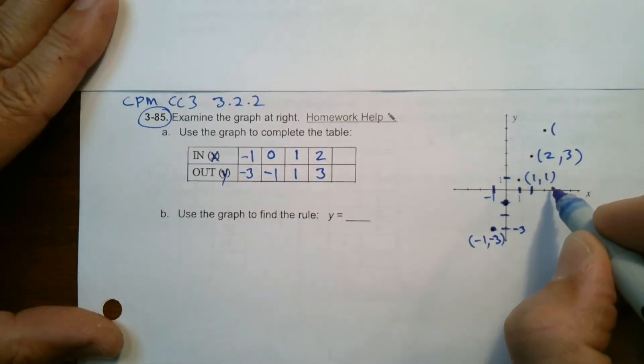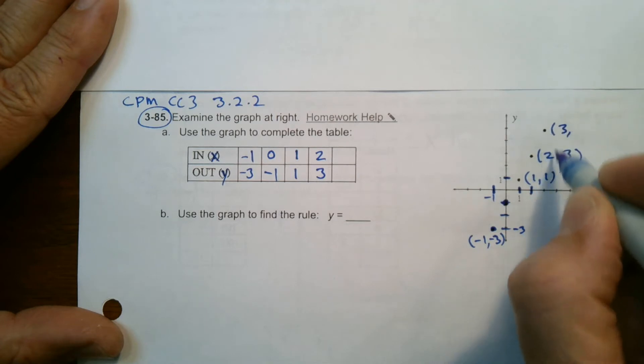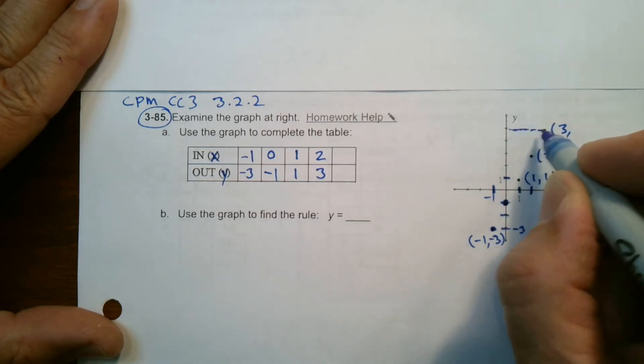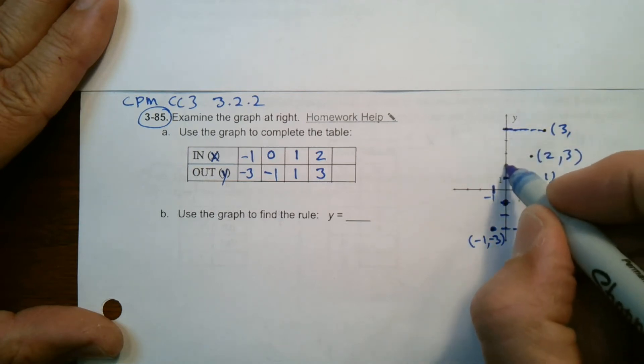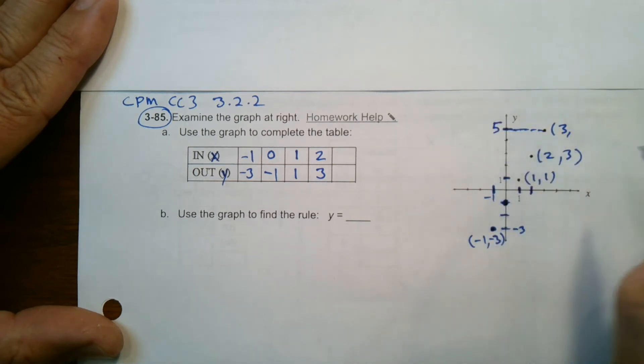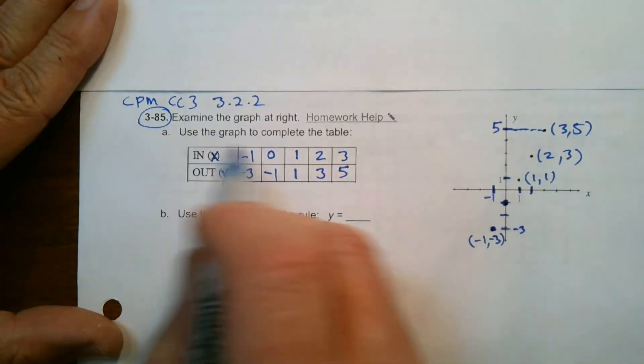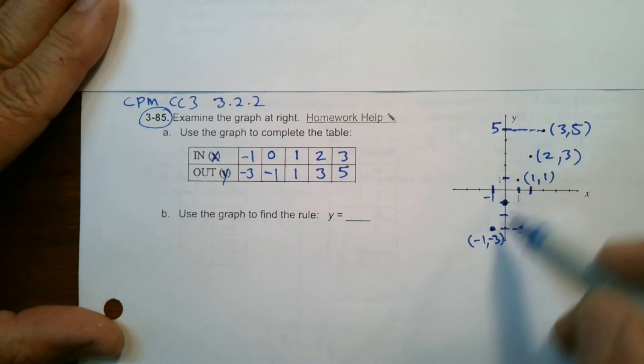And then this point here is at 3 on the X, straight up there. And then over here, where is this at? That's at 1, 2, 3, 4, 5. That's at 5. So 3, 5. So 3 on the X, 5 on the Y. So there's the table from given those points.